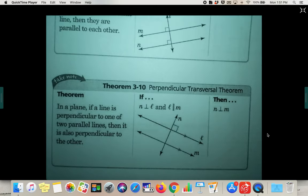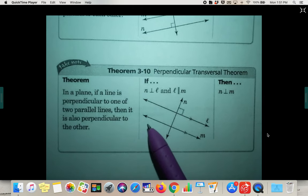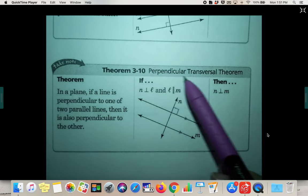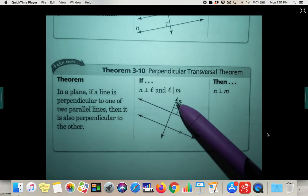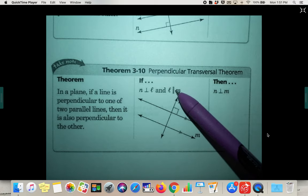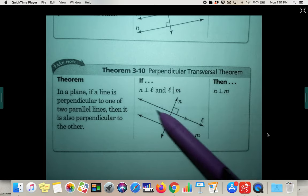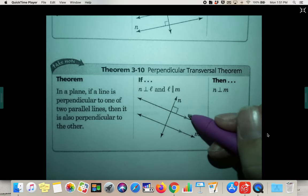And then the last one for today, 3.10, this is the perpendicular transversal theorem. If N is perpendicular to L, so N is a right angle with L, and L is parallel to M—these two are already marked parallel like they are—